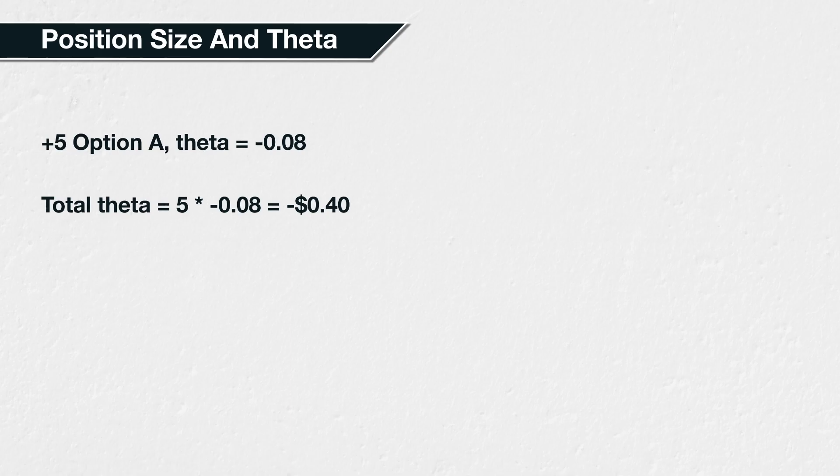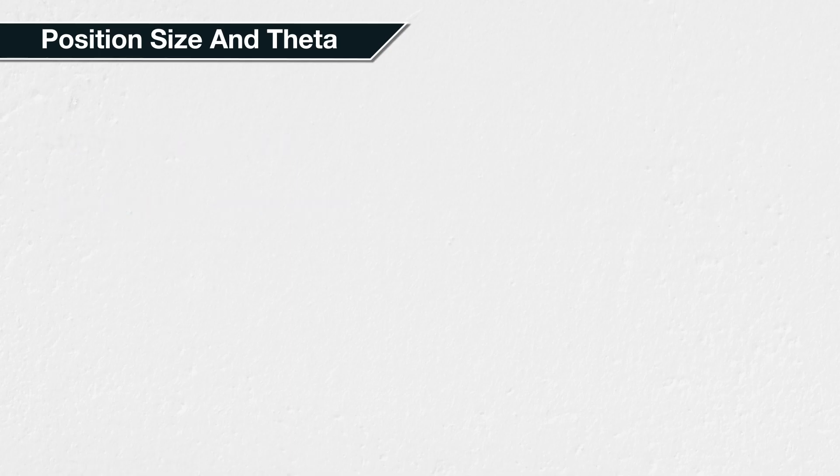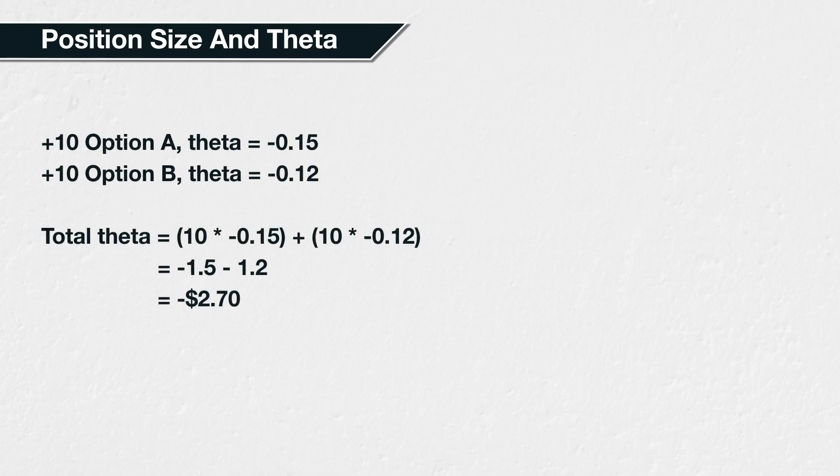This means you would expect the position to lose 40 cents over the next day if all else remains equal. If you purchase 10 calls with a theta of minus 0.15 and purchase 10 put options with a theta of minus 0.12, the total theta of your position is minus $2.70. This is calculated as 10 multiplied by minus 0.15 plus 10 multiplied by minus 0.12, which equals minus 1.5 minus 1.2, which equals minus 2.7.